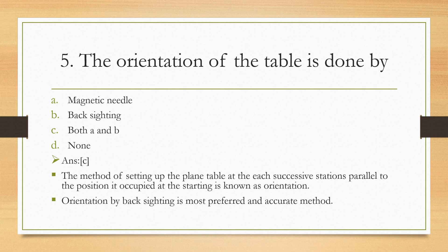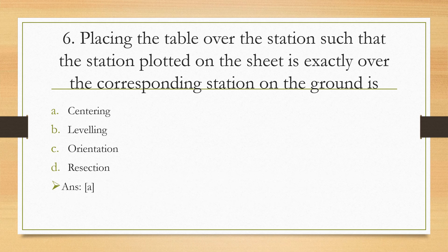The orientation of the table is done by: magnetic needle, back sighting, both A and B, or none? The right answer is both A and B. Actually, the orientation is the method of setting the plane table at each successive station parallel to the position it occupied at the starting station. Orientation by back sighting is most preferred and accurate method.